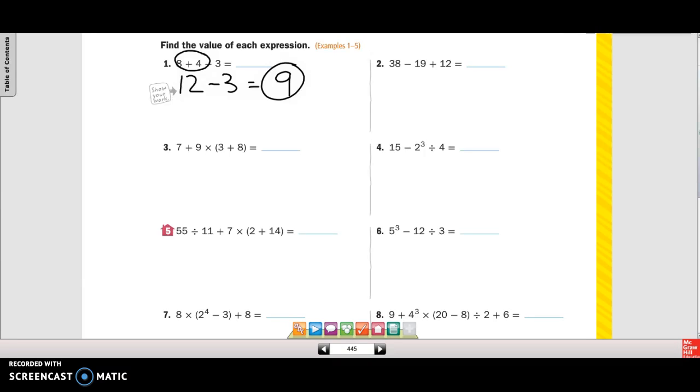Our next one, we still just have subtraction and addition. And since that's all one step, we're going to go left to right. So I have 38 minus 19. So we have 19 plus 12 is 31.